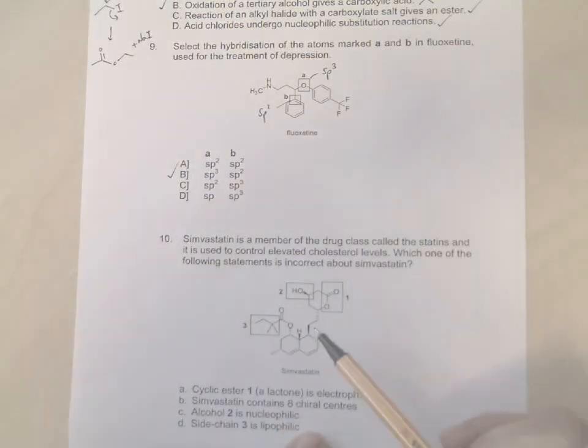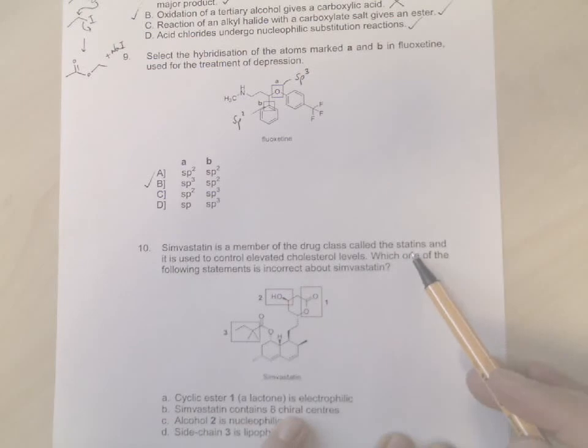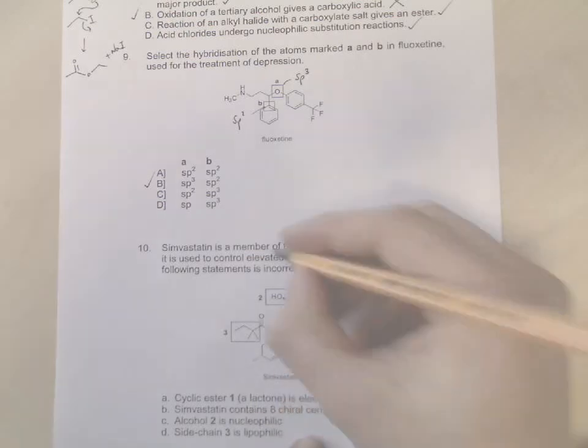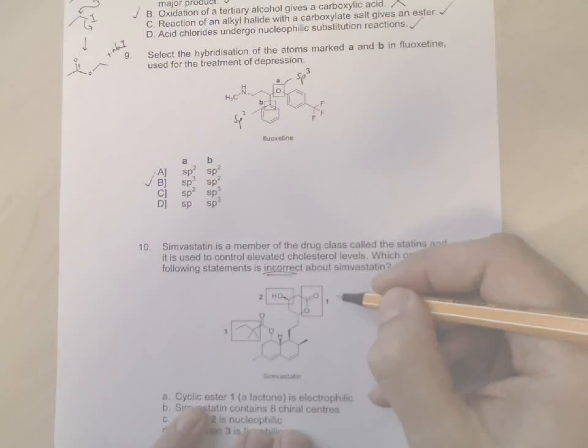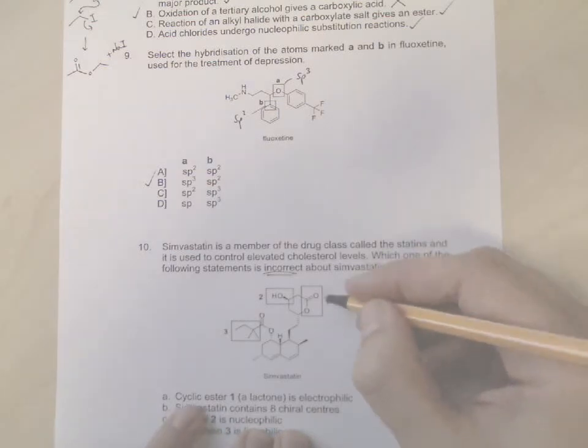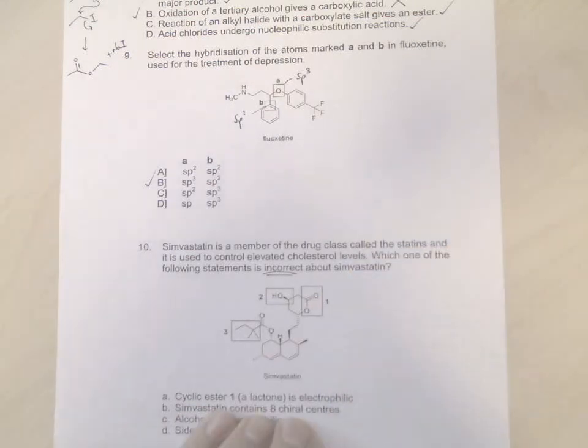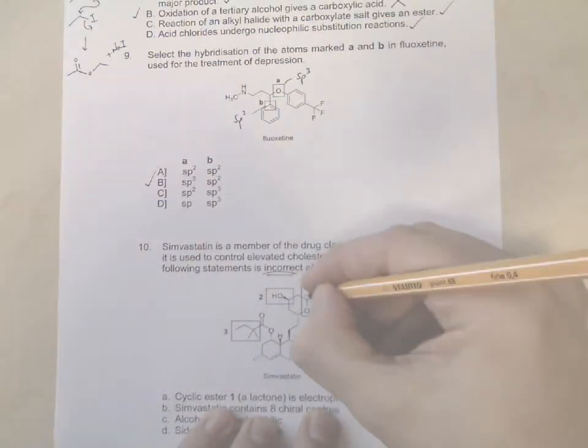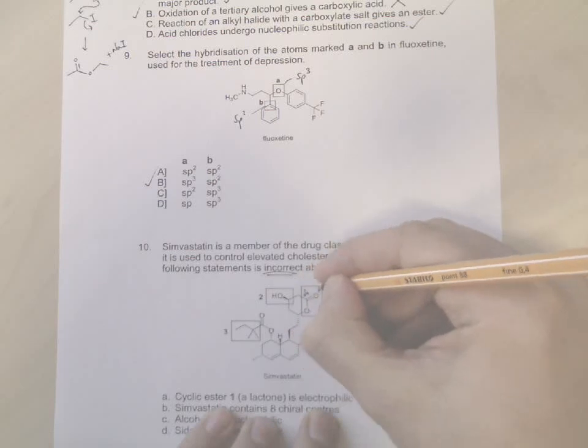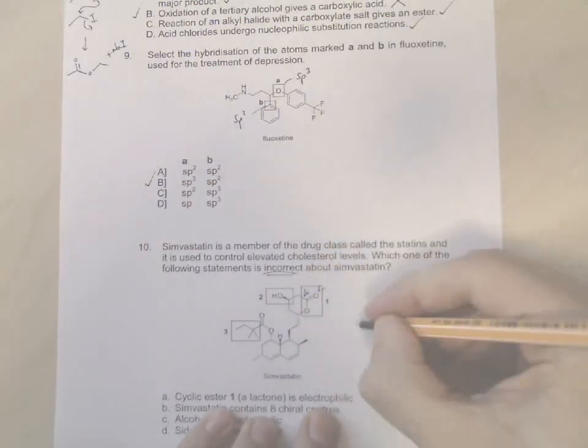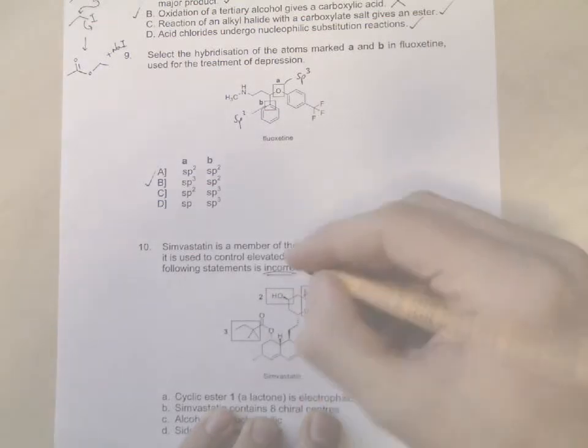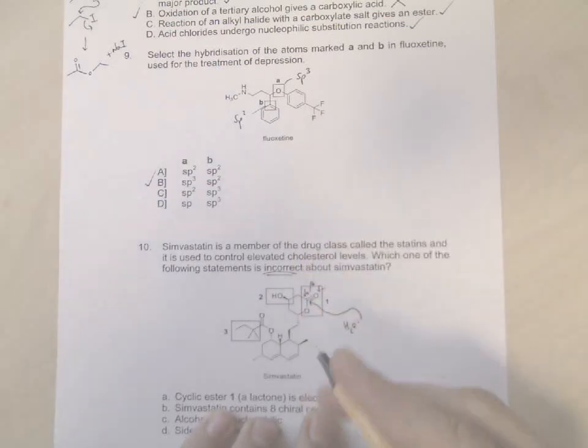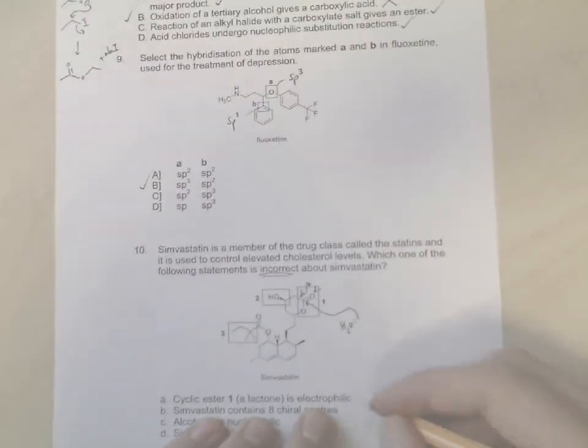And then finally, question 10. Simvastatin is a member of the drug class called the statins, and this is used to control elevated cholesterol levels. Okay, which of the following statement is incorrect about simvastatin? Well, quick part A: Cyclic ester one. Okay, so this cyclic ester here, which is called a lactone, is electrophilic. Well yes, it is electrophilic because we know that this carbon is delta plus and can be attacked by nucleophiles such as water in the body. And so water is nucleophile, the ester is an electrophile. So that's correct.